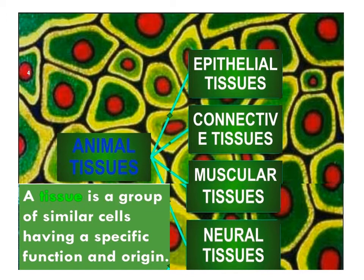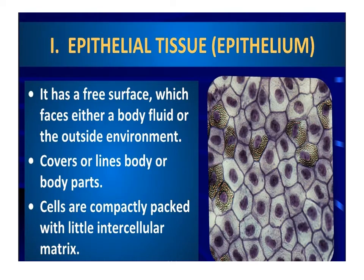Animal Tissue: A tissue is a group of similar cells having their specific functions and origins. Animal tissues are broadly classified into four types: epithelial tissue, connective tissue, muscular tissue, and neural tissue.